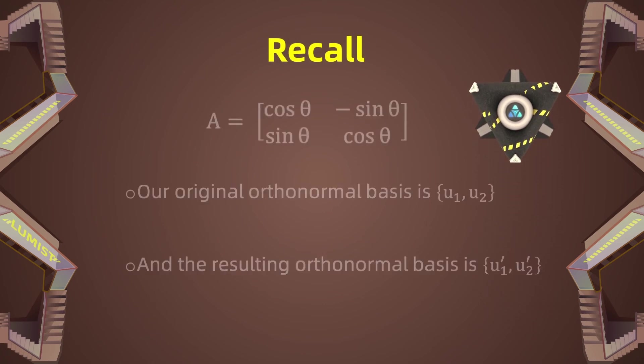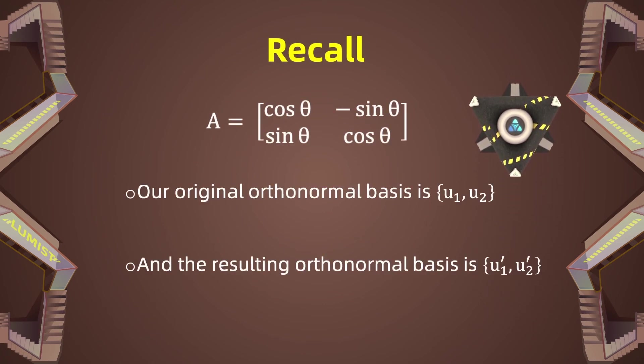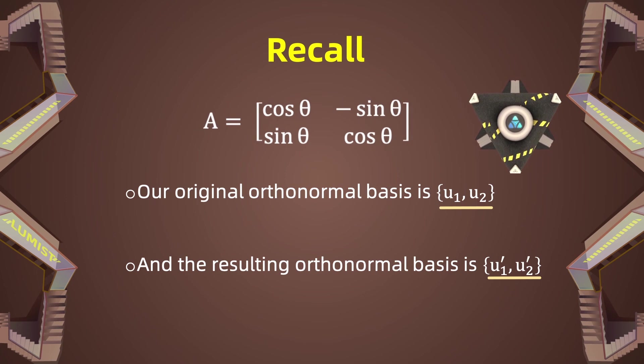And here we have a specific example. We're changing an orthonormal basis in R2 to another orthonormal basis in R2. The first one is denoted by U1, U2. The second one is U1 prime and U2 prime. We're going from the basis whose elements are U1 and U2 to the other basis using this matrix A, a rotation through an angle theta.